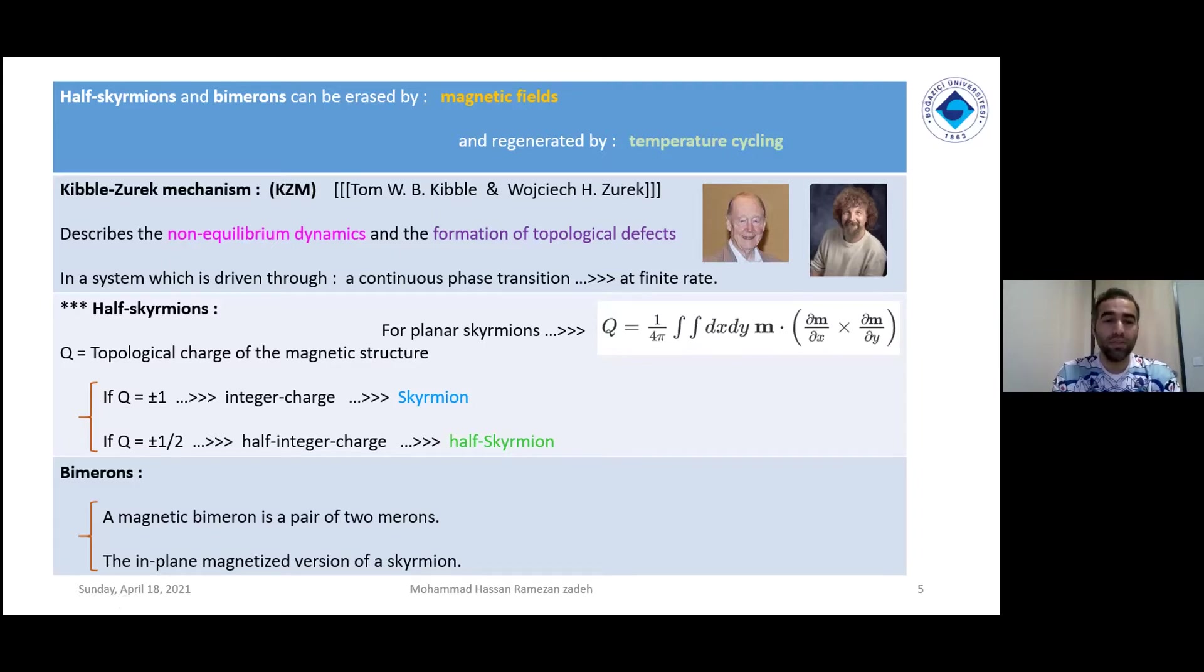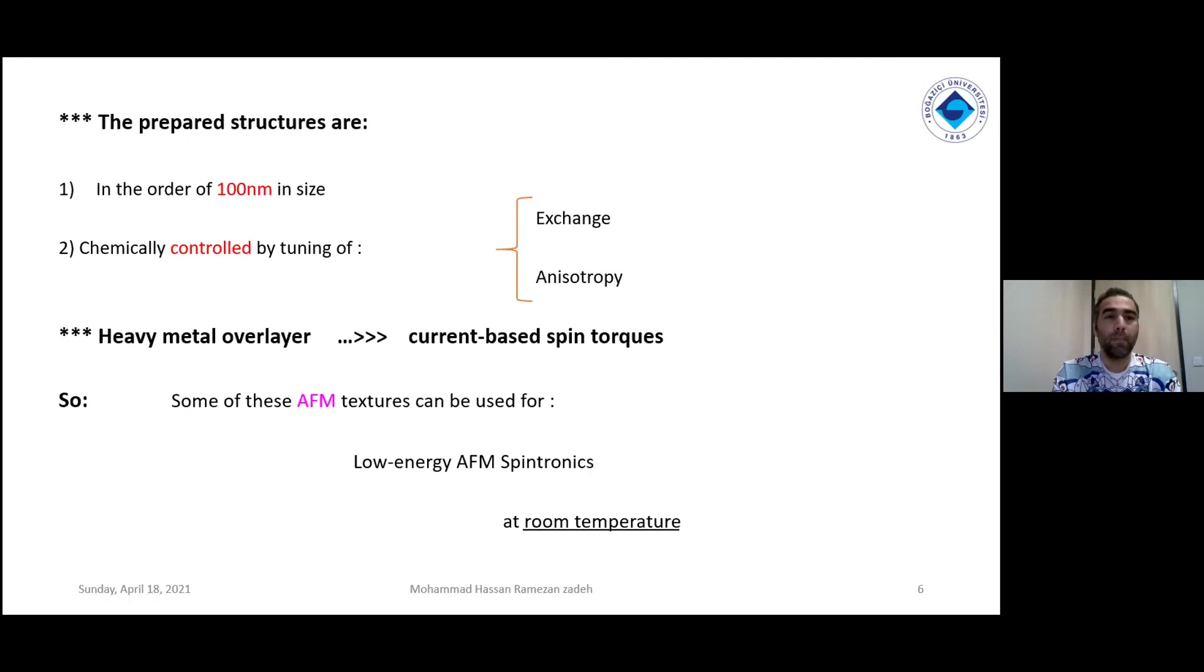What about bimerons? A magnetic bimeron is a pair of two merons. The in-plane magnetized version of a skyrmion is considered as bimeron. What they prepared was in the order of 100 nanometers in size, and the samples were controlled by manipulating exchange, stiffness, and anisotropy.